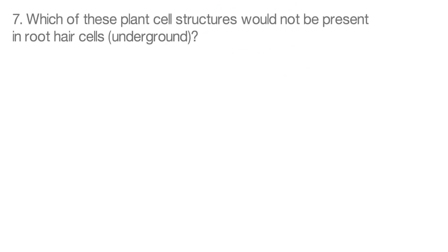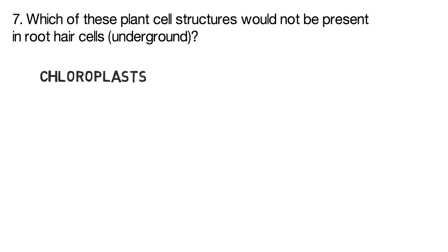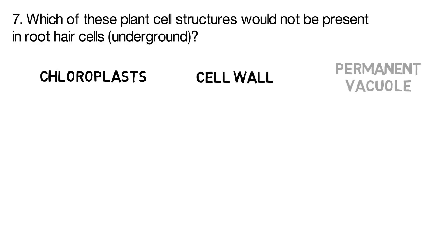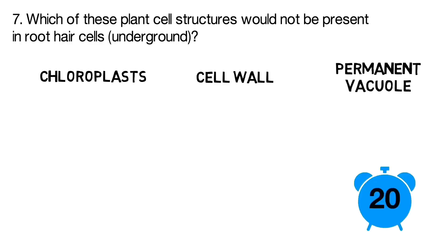Question number seven. Which of these plant cell structures would not be present in root hair cells which are found underground? Is it chloroplasts? Is it a cell wall? Or is it a permanent vacuole?